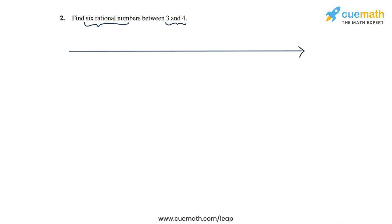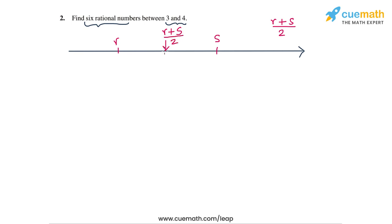There are at least two ways we could do this. The first approach is the midpoint approach, which relies on the fact that to find a rational number between two rational numbers R and S, you can add R and S and divide the sum by 2, giving R plus S by 2, which will be a rational number lying exactly midway between R and S.